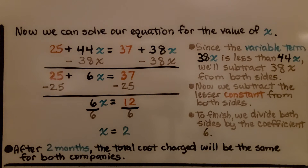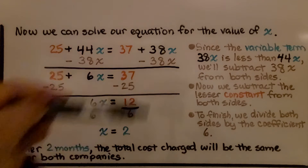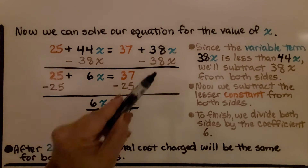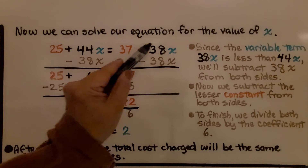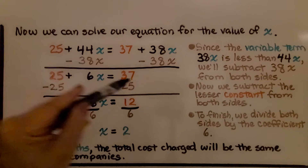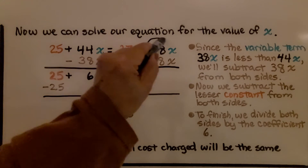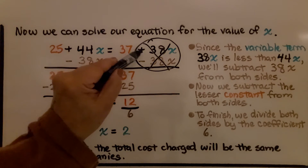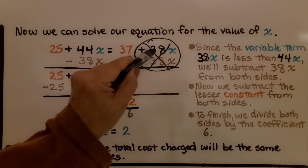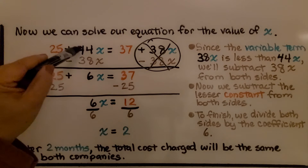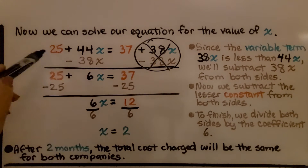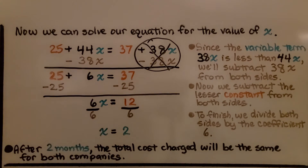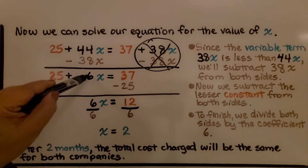Now we can solve our equation for the value of x. Since the variable term 38x is less than 44x, we'll subtract 38x from both sides. This is a positive 38 and this is a positive 44 — we're going to subtract 38x to make a zero pair. When we see this equation, this plus sign goes with coefficient 38, and this plus sign goes with coefficient 44. We subtract 38 from both sides — this is eliminated, and now we only have 37 on that side. When we subtract 38x from this side, we get 6x.